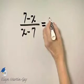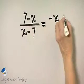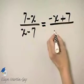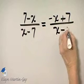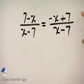In the numerator I have negative x plus 7, just rearranging the order of the terms. By doing so, I hope you can see that the numerator binomial and the denominator binomial are opposites of each other.